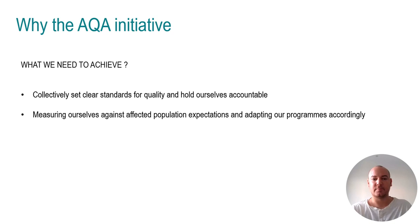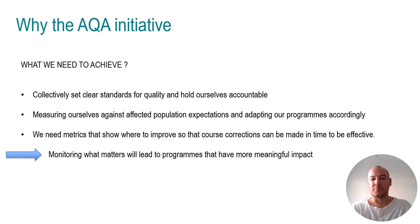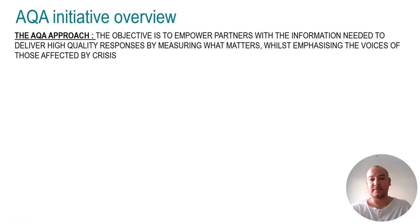So what do we need to achieve? We need to collectively set clear standards for quality and hold ourselves accountable. We need to measure ourselves against affected population expectations and adapt our programs accordingly. We need metrics that show where to improve so that course corrections can be made in time to be effective. Monitoring what matters will lead to programs that have more meaningful impact.